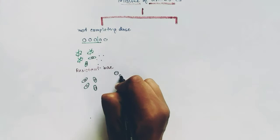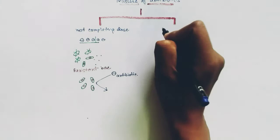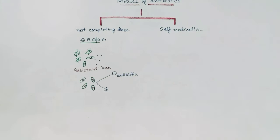So if that resistant bacteria causes that disease again in your body, that particular antibiotic will not do any good — it will not be able to kill the mutant bacteria.